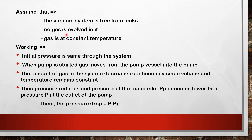Assume the vacuum system is free from leaks, no gas is evolved in it, and gas is at constant temperature. Under these assumptions, the working of the system is explained: when the pump starts, gas moves from the vessel into the pump, and the amount of gas in the system decreases continuously since volume and temperature remain constant.